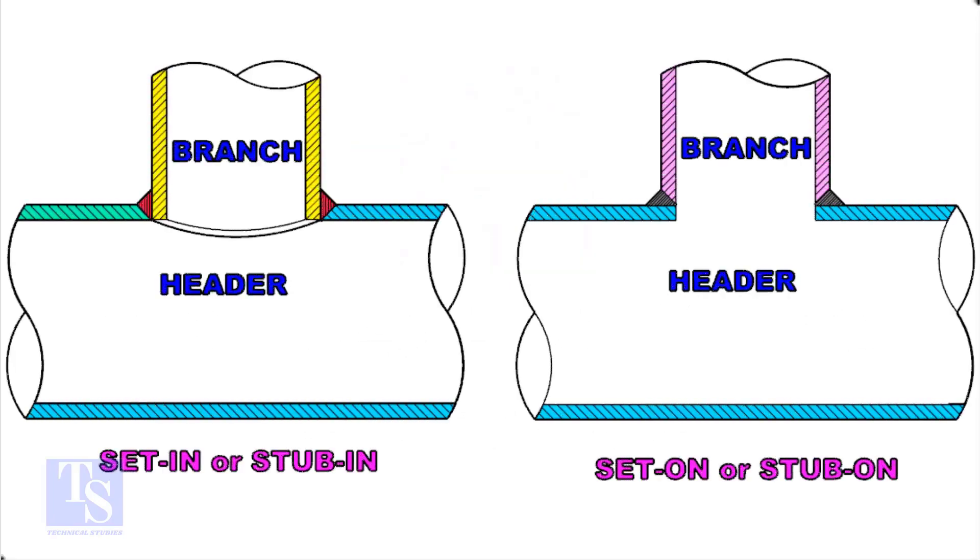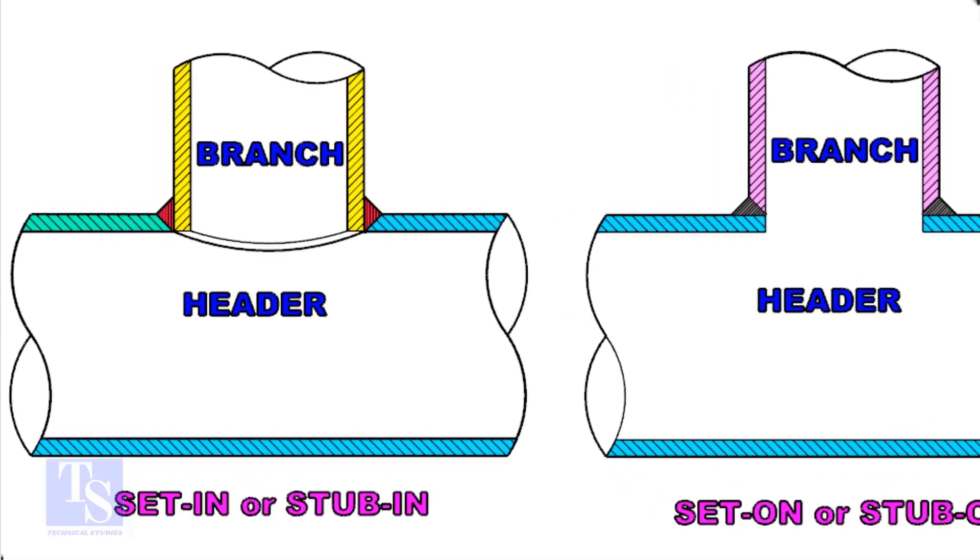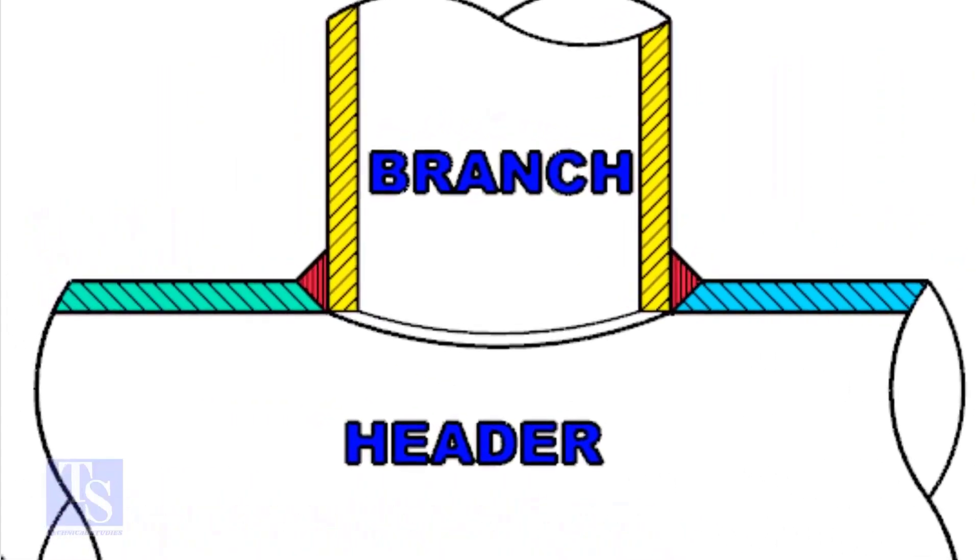Let us check the difference between a stub-in and stub-on connection. Look at the stub-in joint, the bevel is prepared on the header. And the branch pipe is in the header.